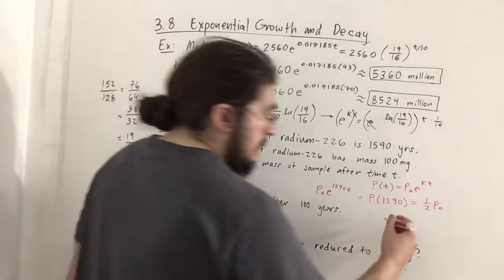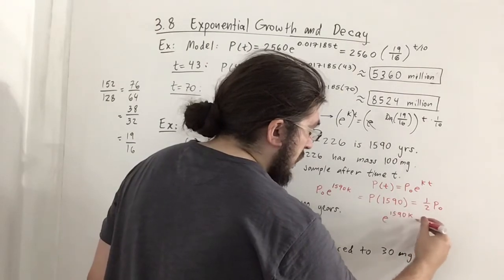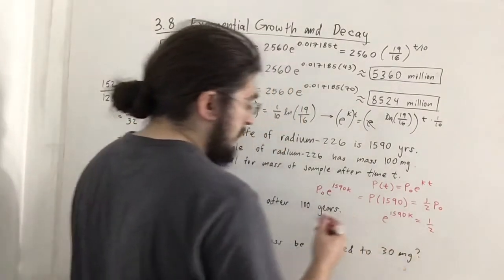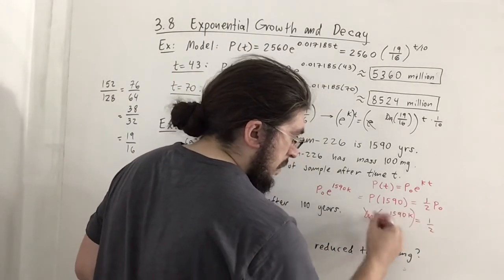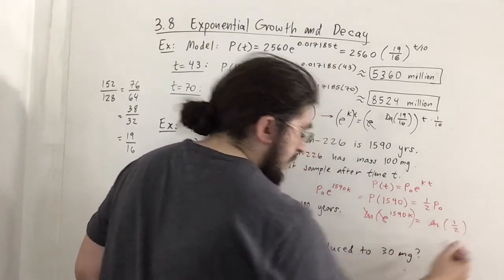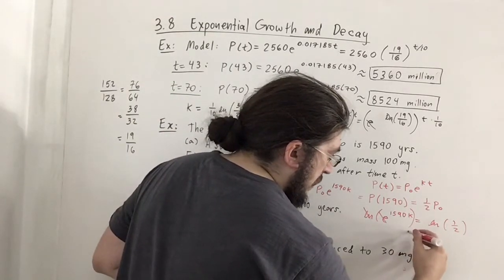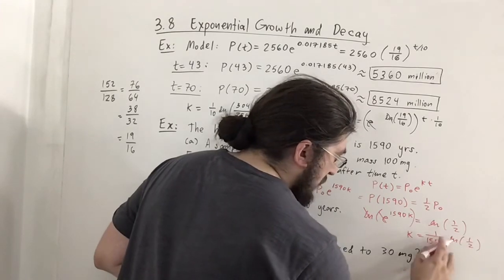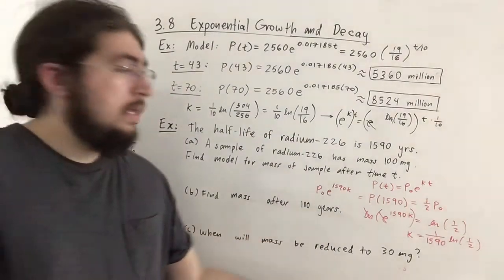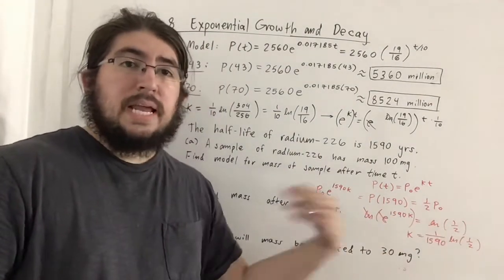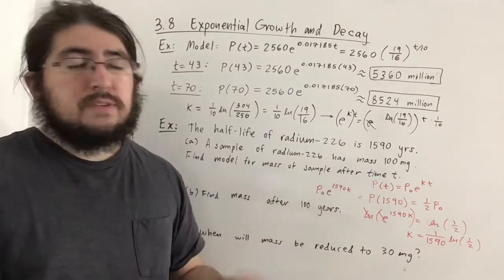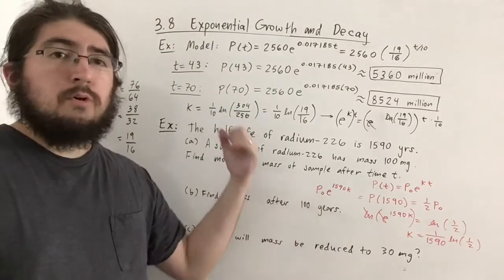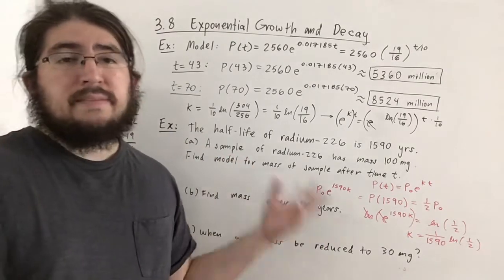Taking ln of both sides: 1590k = ln(1/2). So k = (1/1590)·ln(1/2). This is negative, which is easy to see because ln(1/2) = ln(2^(-1)) = -ln(2), and ln(2) ≈ 0.693. With decay problems opposed to growth problems, the relative growth constant k is negative. I'll approximate this k value and write out the model.